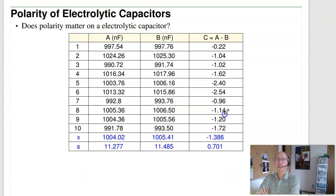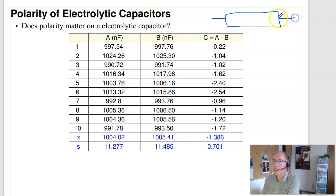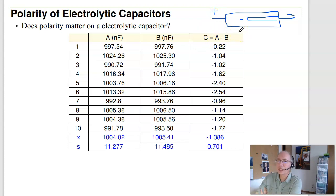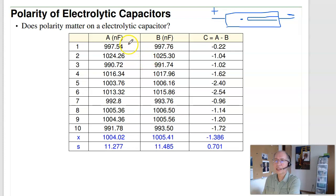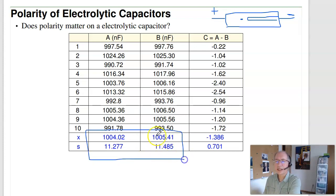Are electrolytic capacitors polarized? Same experiment: I used a 1000 nanofarad capacitor. These have a stripe indicating the negative side. With the correct polarity, does polarity matter? I'll take 10 of these, measure the capacitance with correct polarity, then measure with incorrect polarity, and find the mean, standard deviation, and sample size. Again, if all I did was record the mean, standard deviation, and sample size and throw out the rest of the data, I can analyze it.